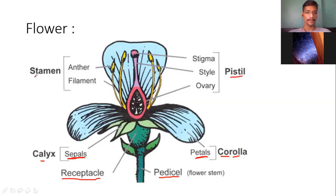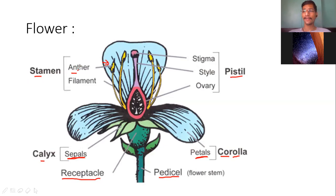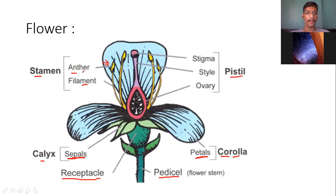The receptacle is the base. In this flower, the female portion is known as the pistil and the male portion is known as the stamen. The stamen has two components. The lobed structure you can see here is the anther, and below it is the filament.